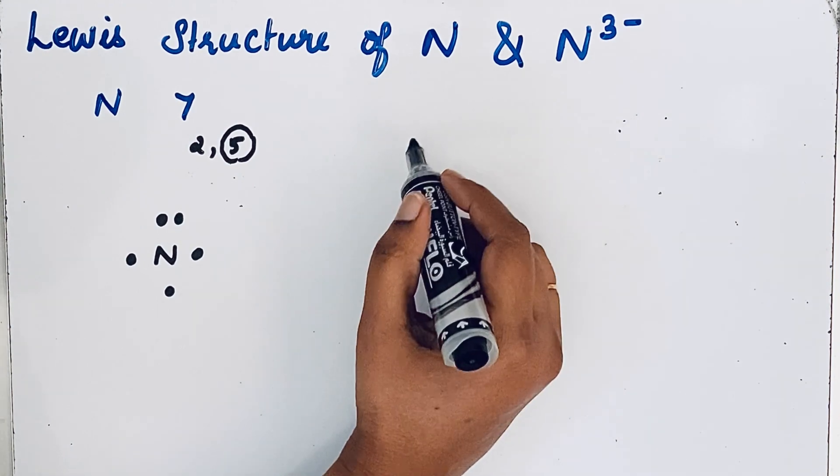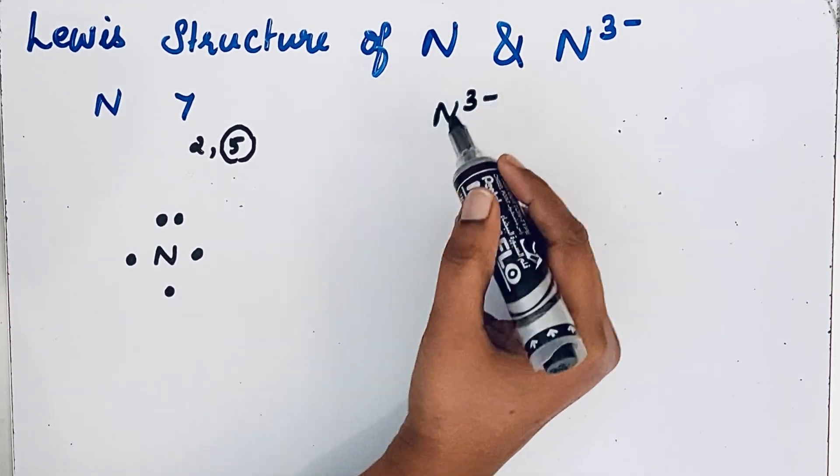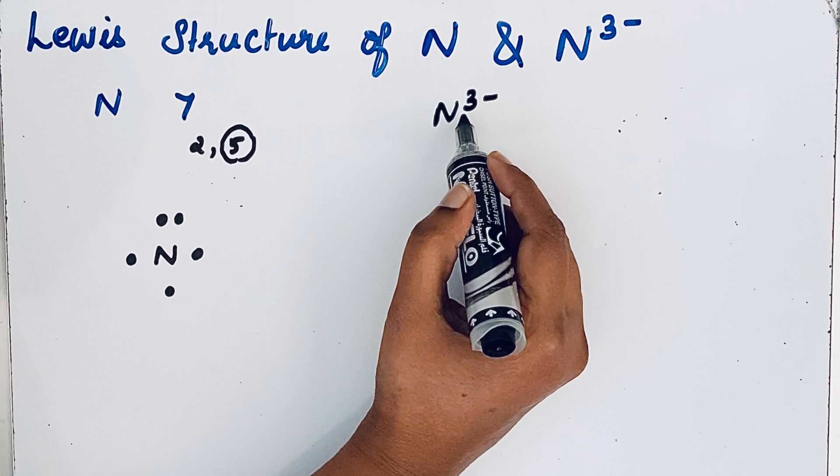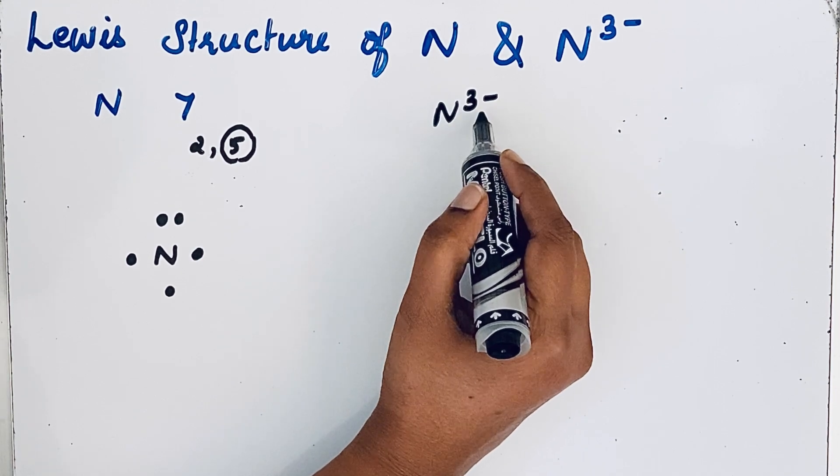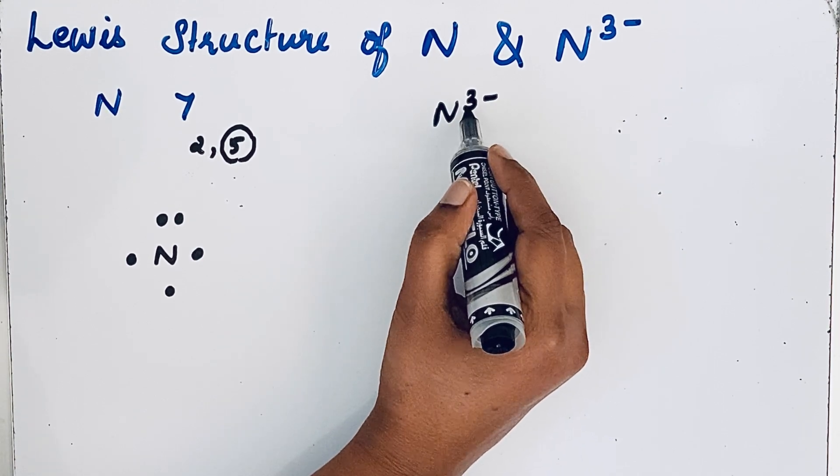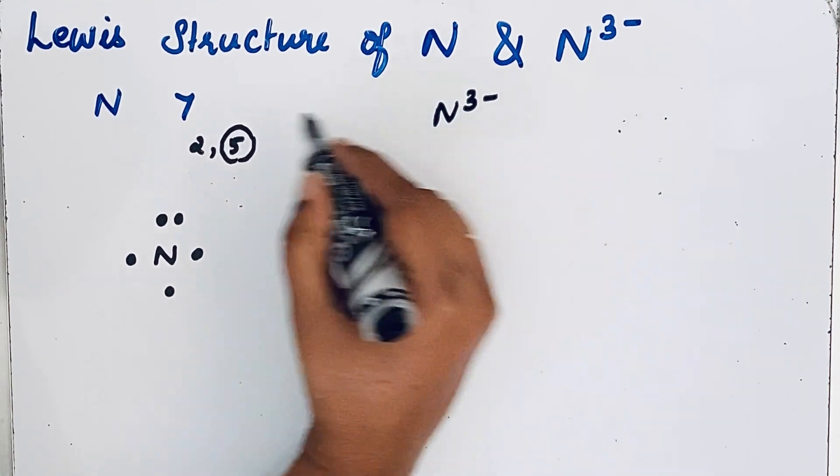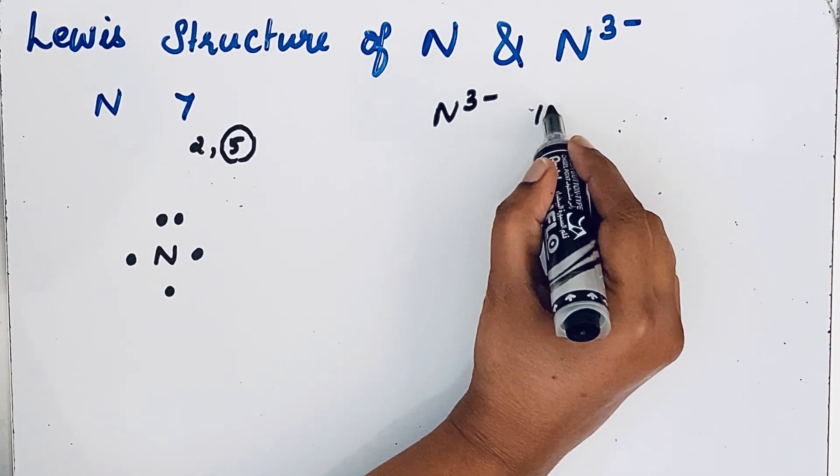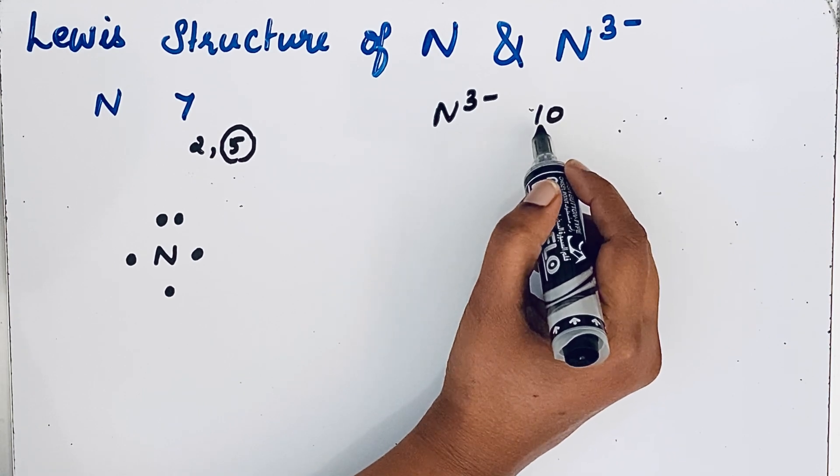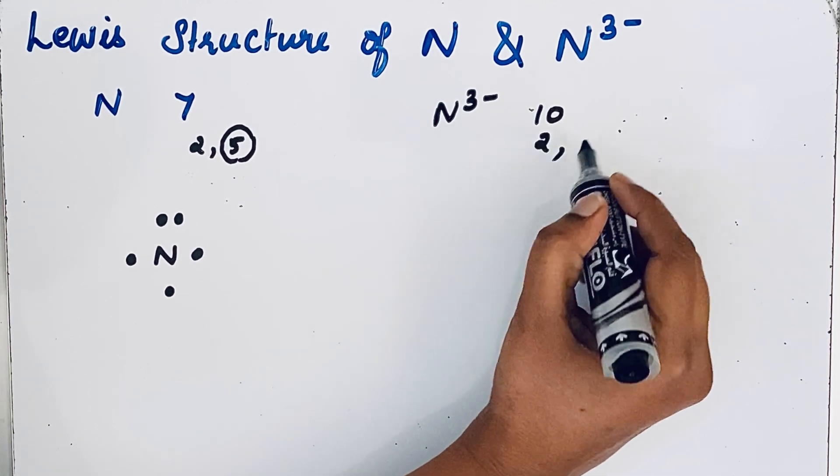Now let us write for N³⁻, nitride ion. Nitride ion is formed when nitrogen absorbs three more electrons, so gaining of electrons. The number of electrons is 7 plus 3 equals 10. Now we can write that electronic configuration as 2,8.